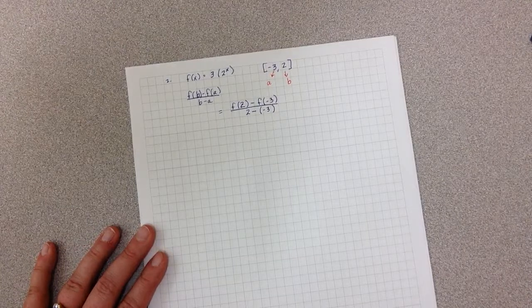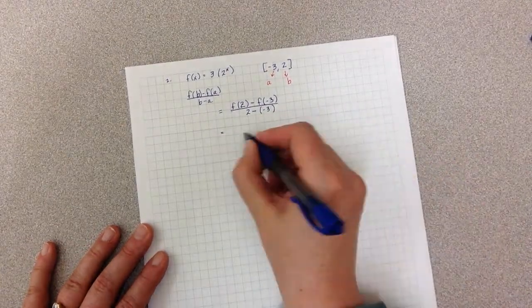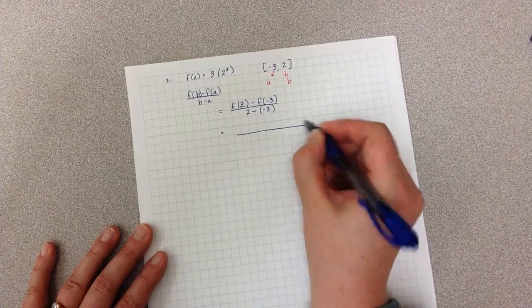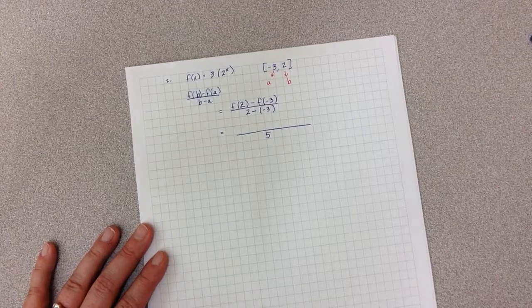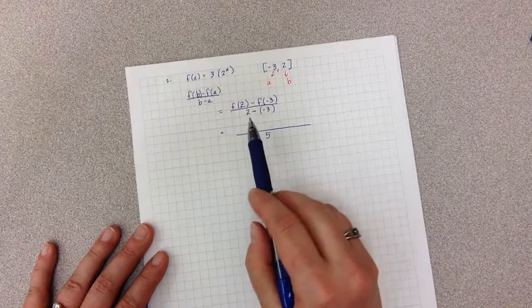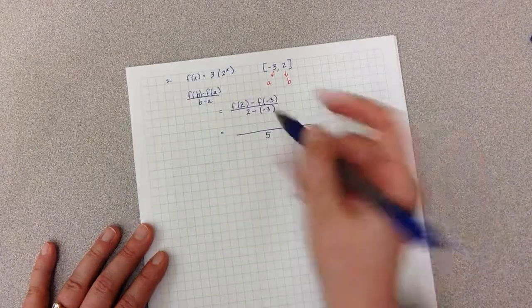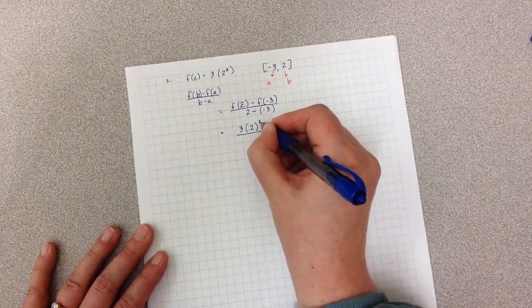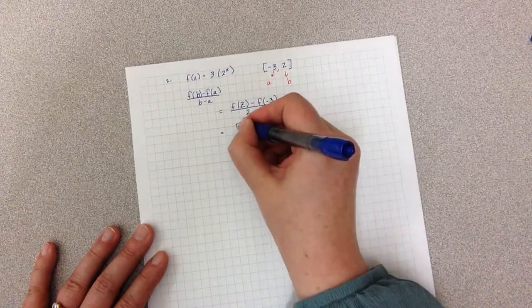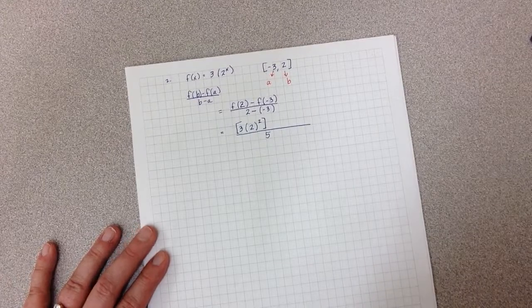I then can simplify the bottom. It's pretty straightforward to do that. 2 minus negative 3 is positive 5. For the top, again, this notation means that I am plugging in 2 into this function. So I've got 3 times 2 to the second power. Big brackets around that so that I know that's the first function I'm simplifying.